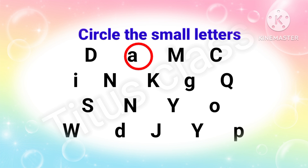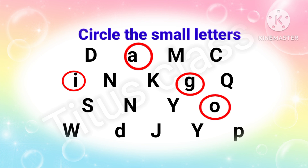Which one is small letter? It's I. I can see another small letter — it is G. In the next line: S, N, Y, O — which one is small letter? Yes, it is O. In the last line: W, D, J, Y, P — small letters are D and P. So this worksheet is also finished.